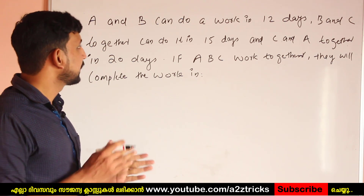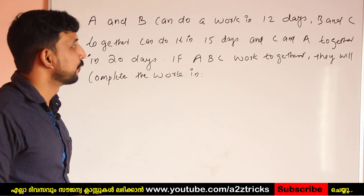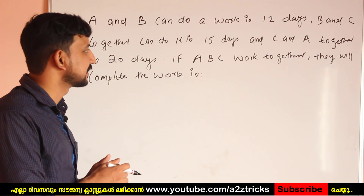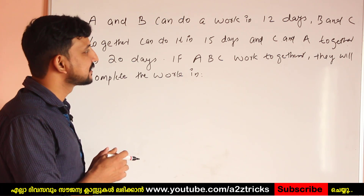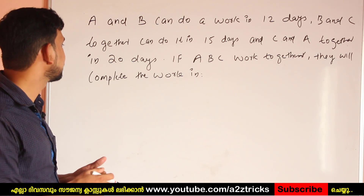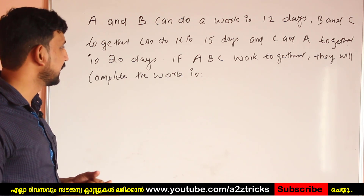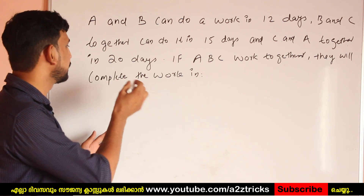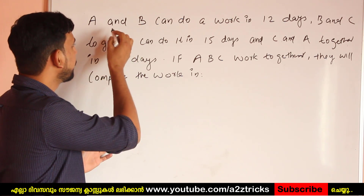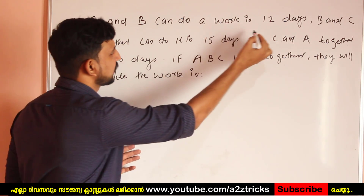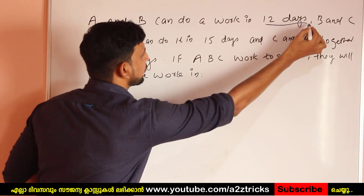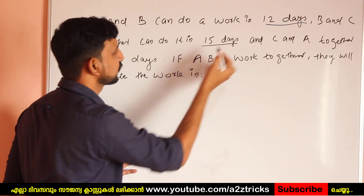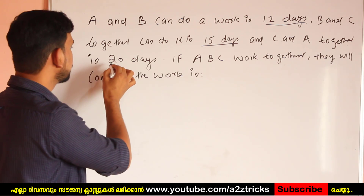The next question: A and B can do a work in 12 days. B and C together can do it in 15 days. And C and A together can do it in 20 days. If A, B, and C work together, in how many days will they complete the work?